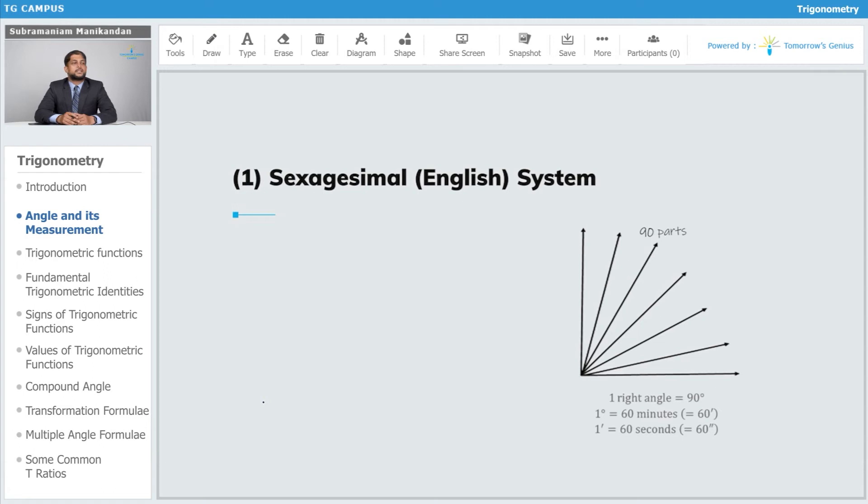The first system is the sexagesimal system, more commonly called the English system of measurement. In this, one complete rotation of the ray OB and coming back to rest at its original location is divided into 360 equal parts.